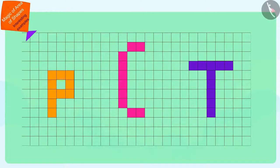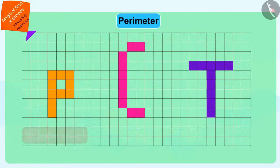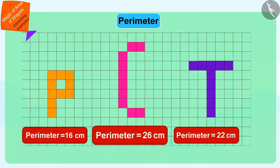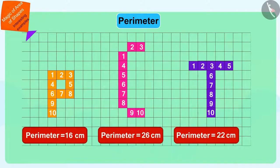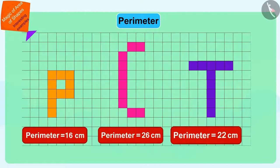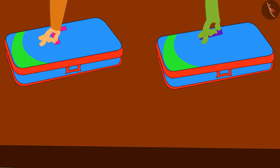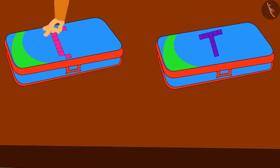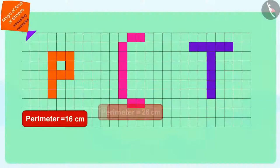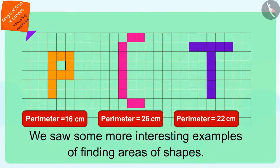Children, you have seen how the areas of the letters of Pinky, Chanda and Tufan are the same. However, their perimeters are different. It is quite possible that shapes having the same area may vary in perimeter. Chanda and Tufan made letters indicating their names on their compass boxes using those stickers so that they would never fight again. Children, in this video we saw some more interesting examples of finding areas of shapes. In the next video, we will see even more interesting examples related to this.